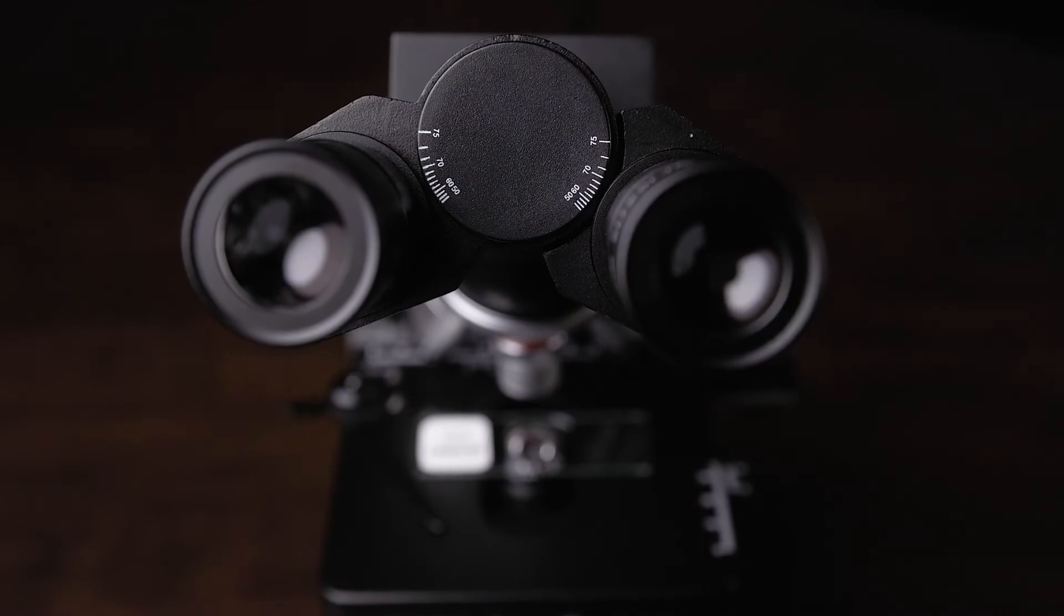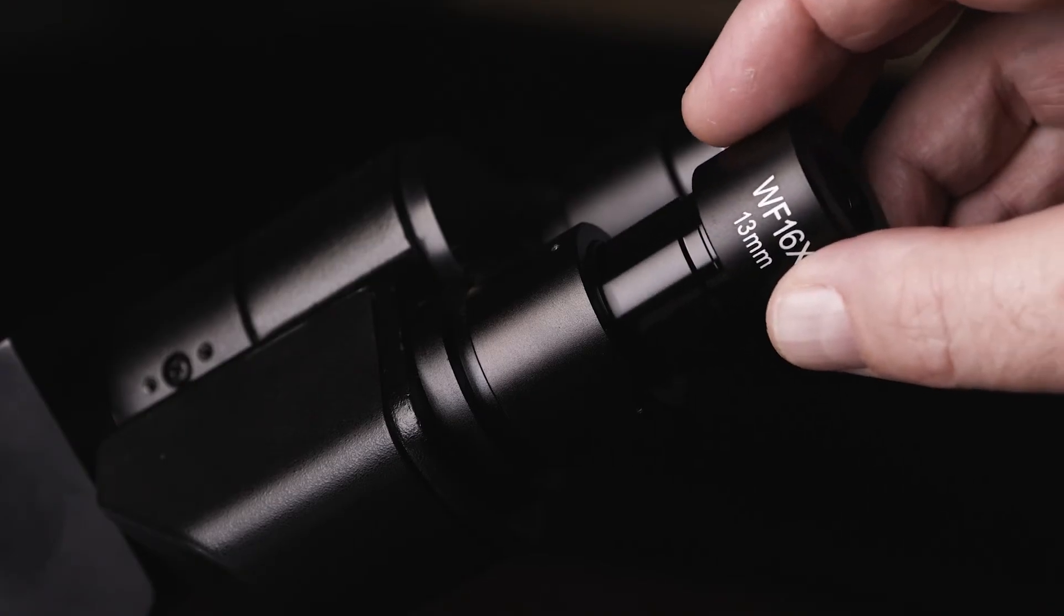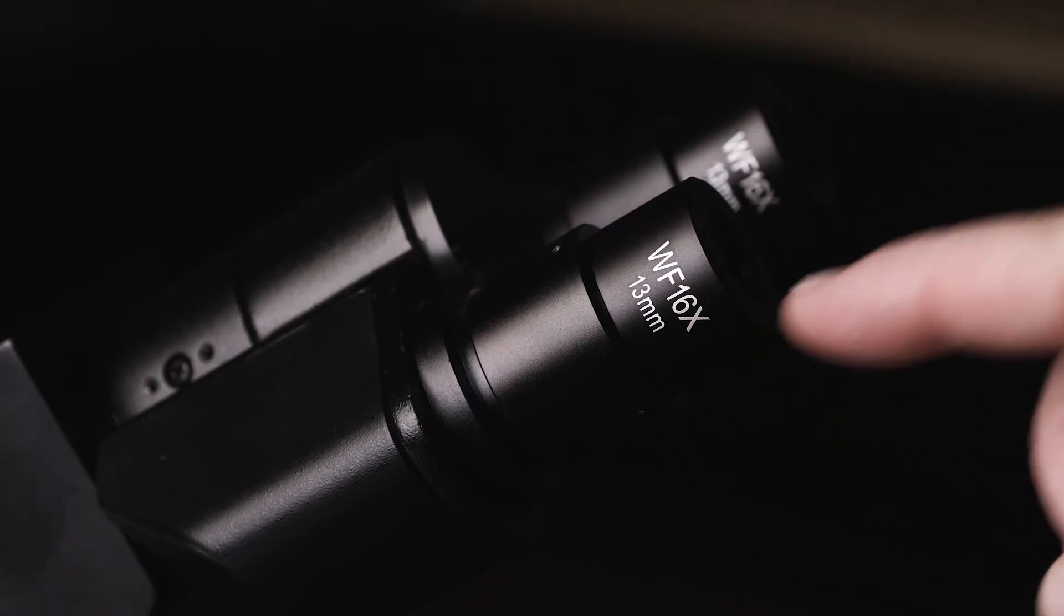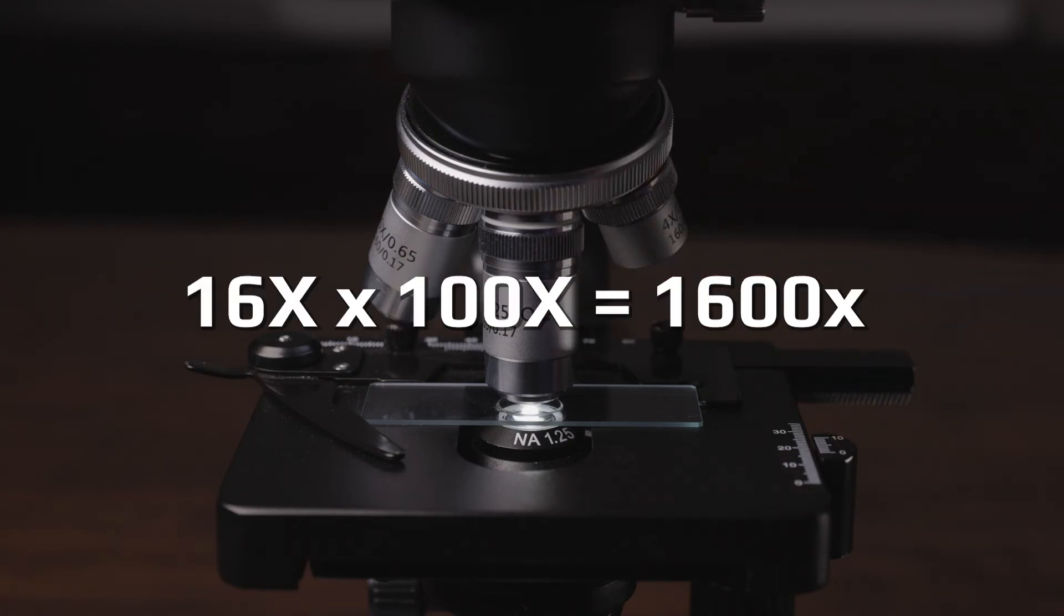Once everything is in place you can look through the microscope and view your specimen. With the eyepieces in place we've now reached our maximum magnification by multiplying the 16 power eyepiece and the 100 power objective, which equals 1600 power.